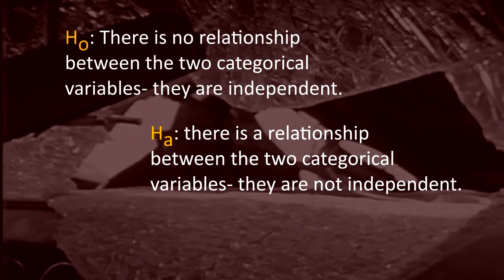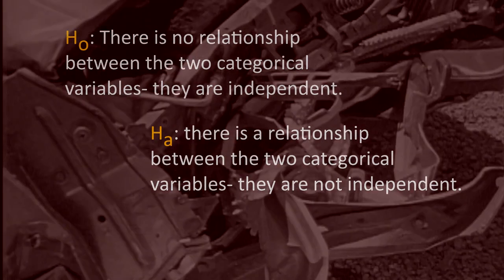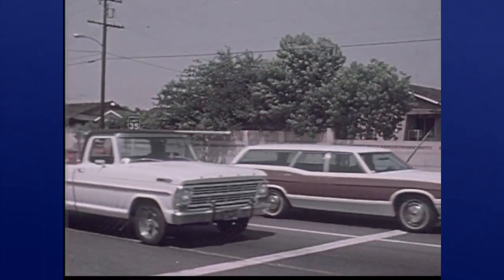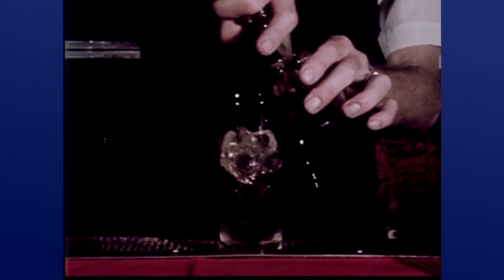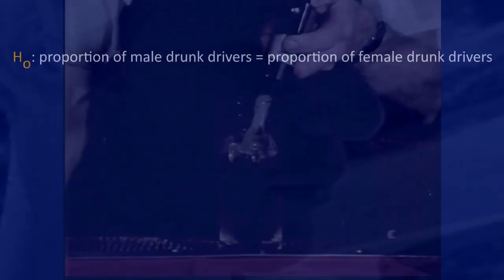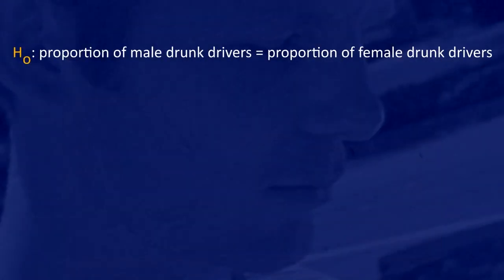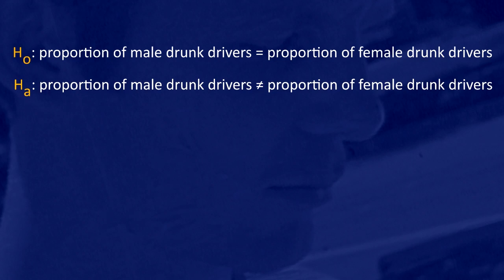Algebraically, independence between gender and driving drunk is equivalent to having equal proportions of who drank or did not drink for males versus females. In fact, the null and alternate hypothesis could be reformulated as the proportion of male drunk drivers is equal to the proportion of female drunk drivers, or the proportion of male drunk drivers is not equal to the proportion of female drunk drivers.